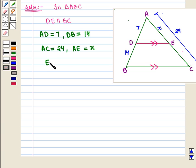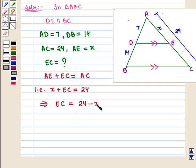Here we should see that AE plus EC equals AC, that is, x plus EC equals 24, which implies that EC equals 24 minus x. So to find EC, we will find the value of x.